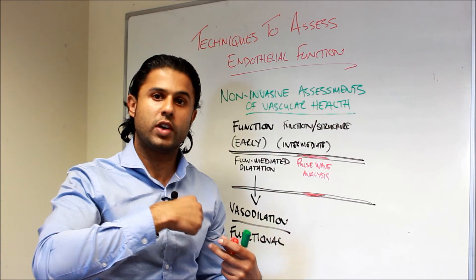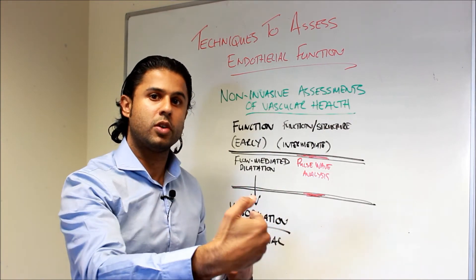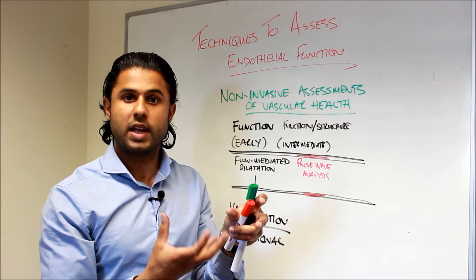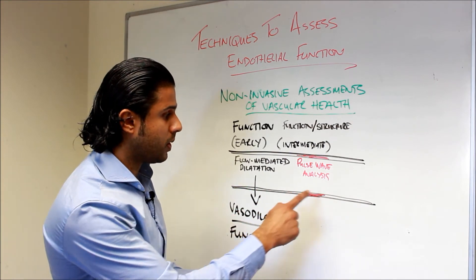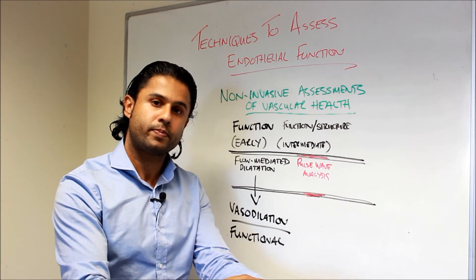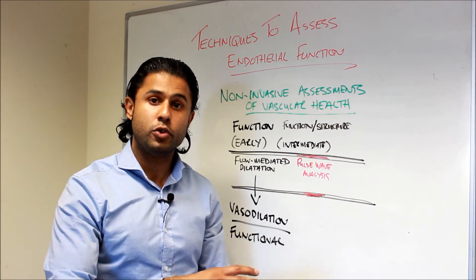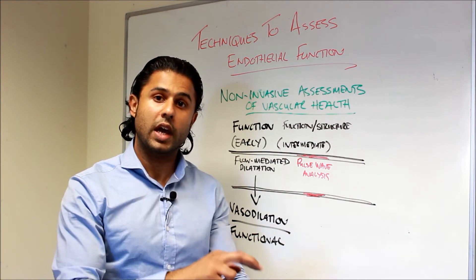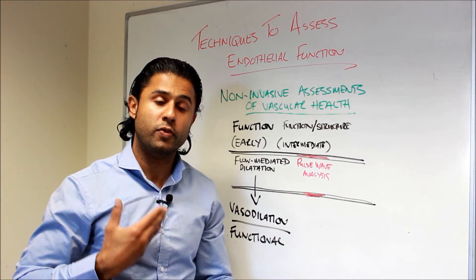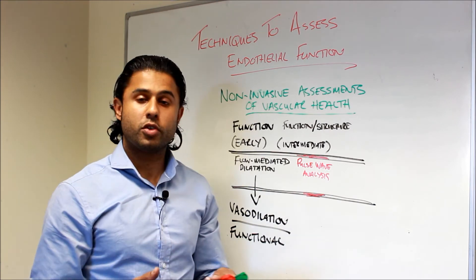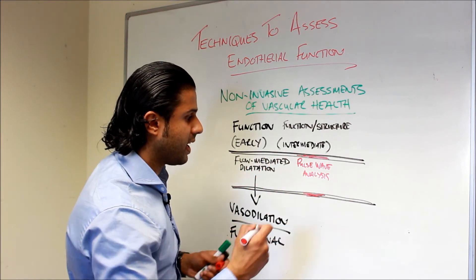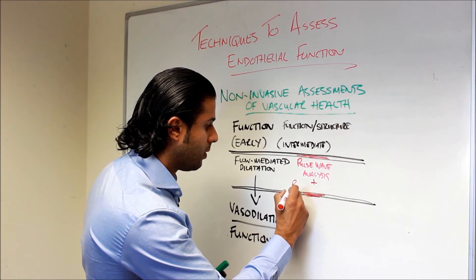If you can imagine if the left ventricle is trying to get blood out to the body and you've got this pressure wave coming back, then it's going to make the job of the left ventricle even harder. And so over time you can get damaged to the left ventricle. Pulse wave analysis is a measure of the pulse pressure wave and you normally measure it in the radial artery. There is another technique called pulse wave velocity, which looks at two arterial sites. You could look at the carotid and the radial or the carotid and the femoral artery and look at the time it takes for the pressure wave to move through those two points.